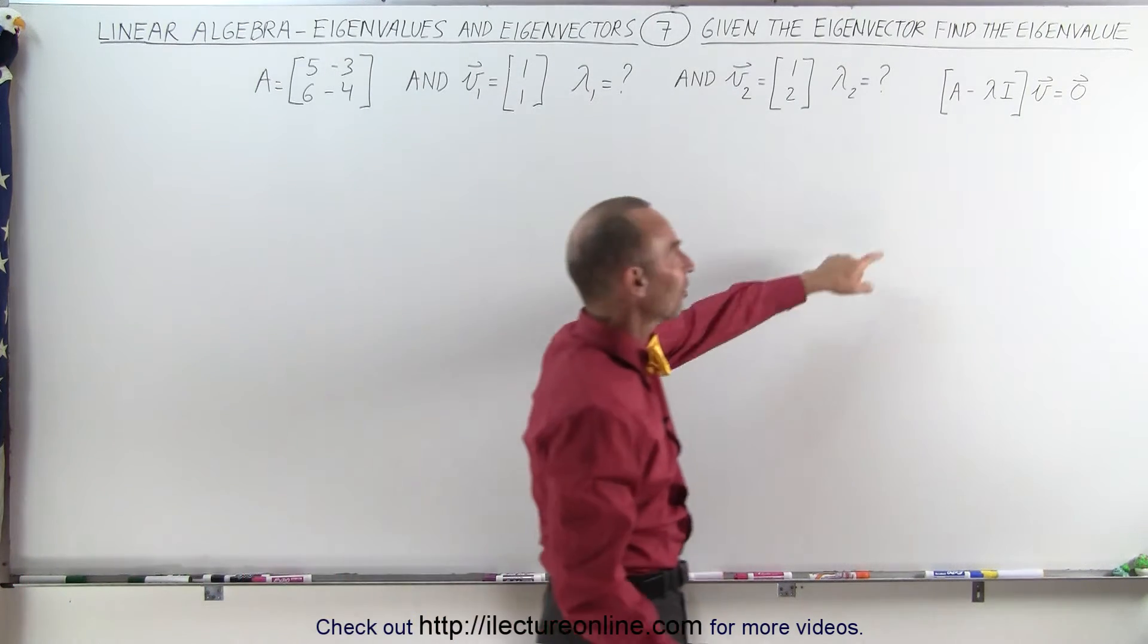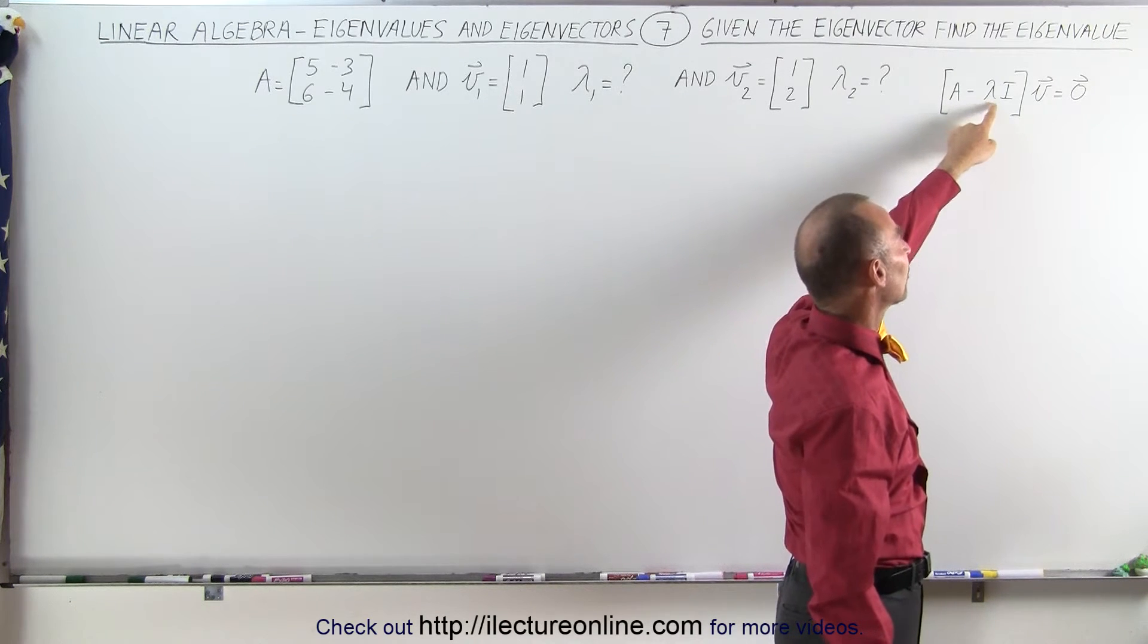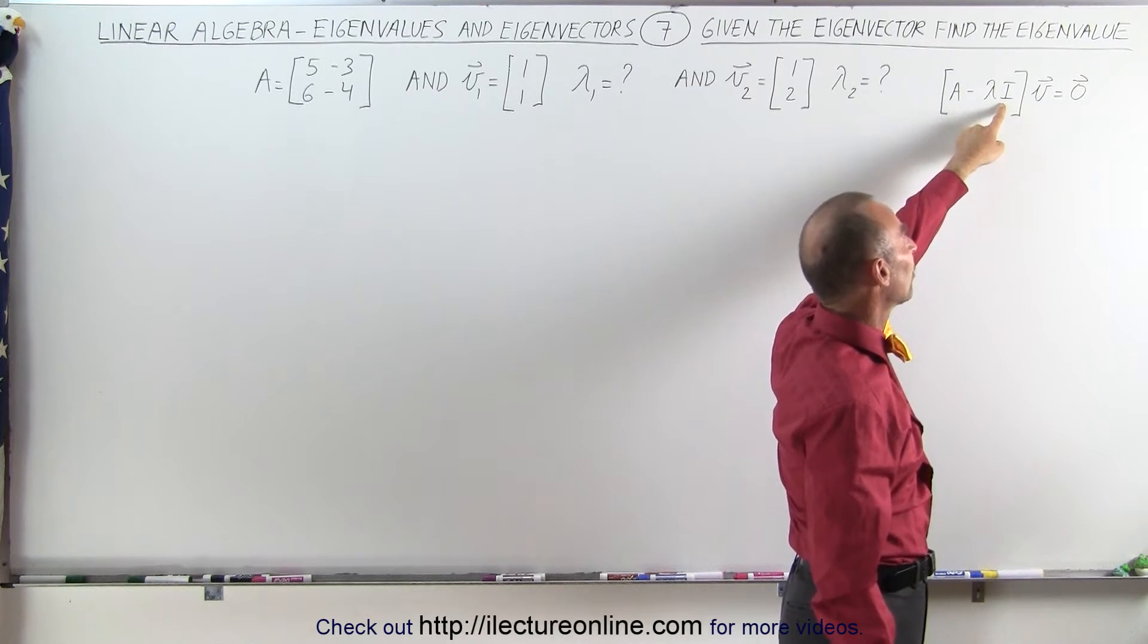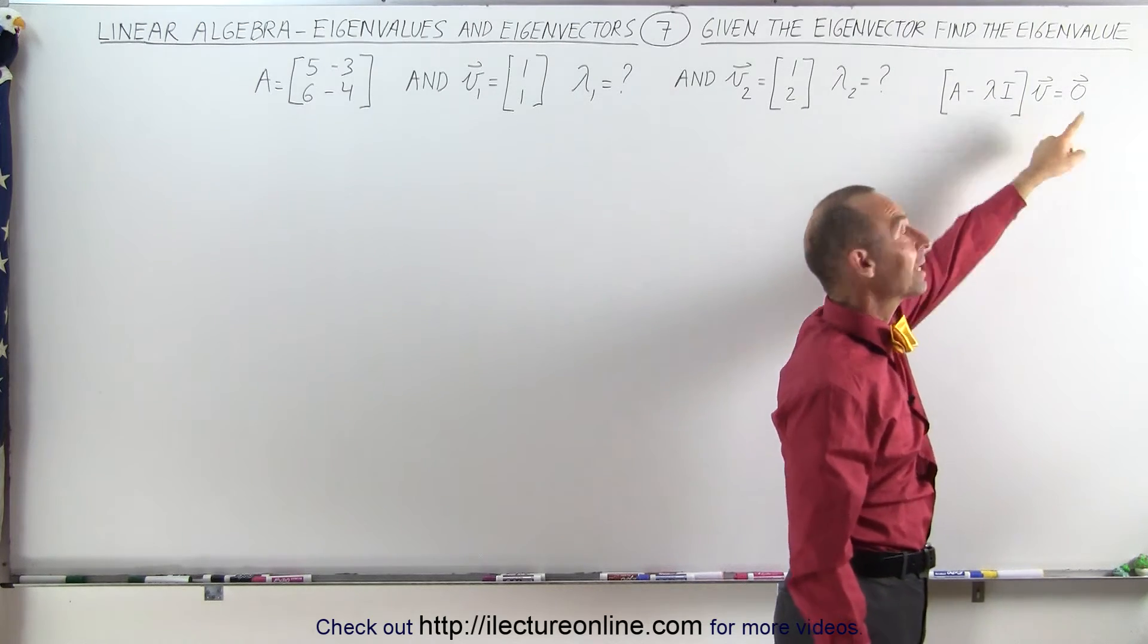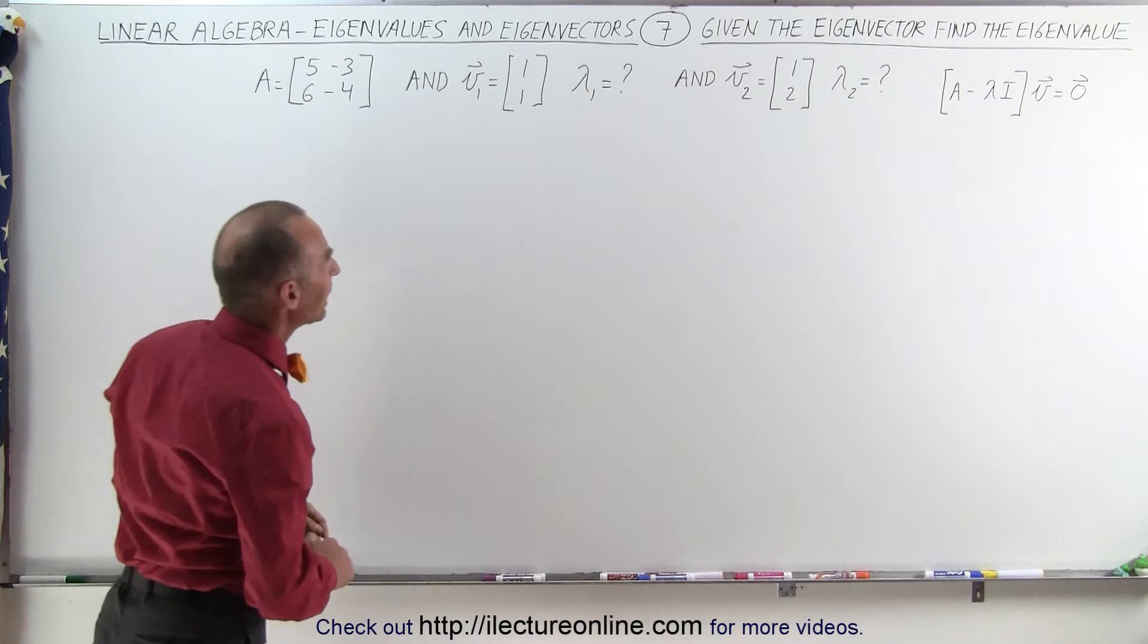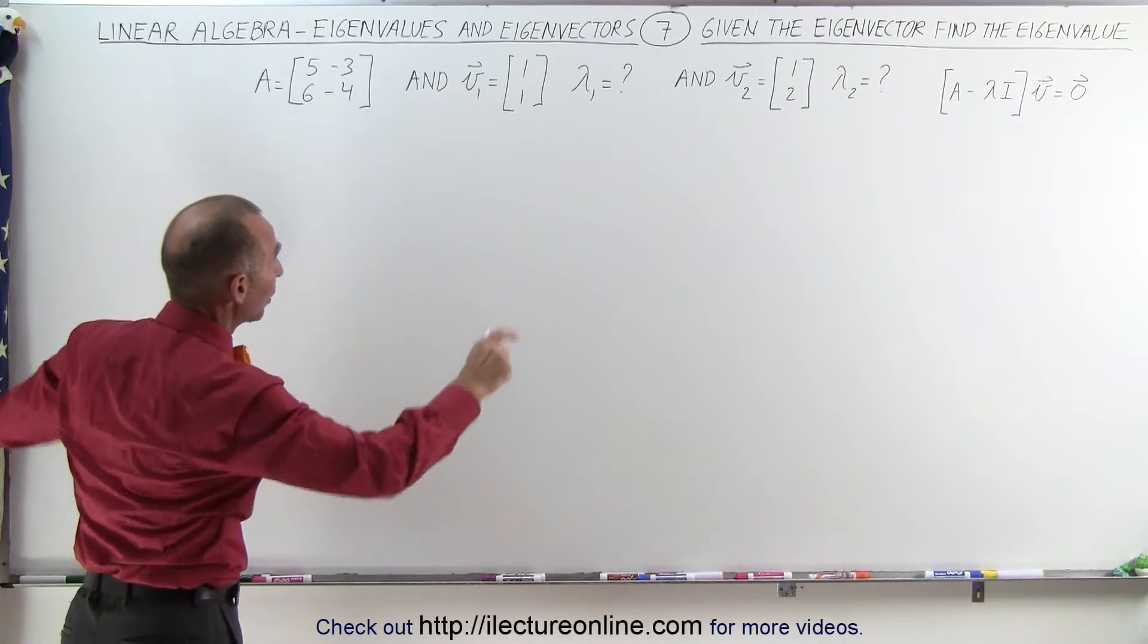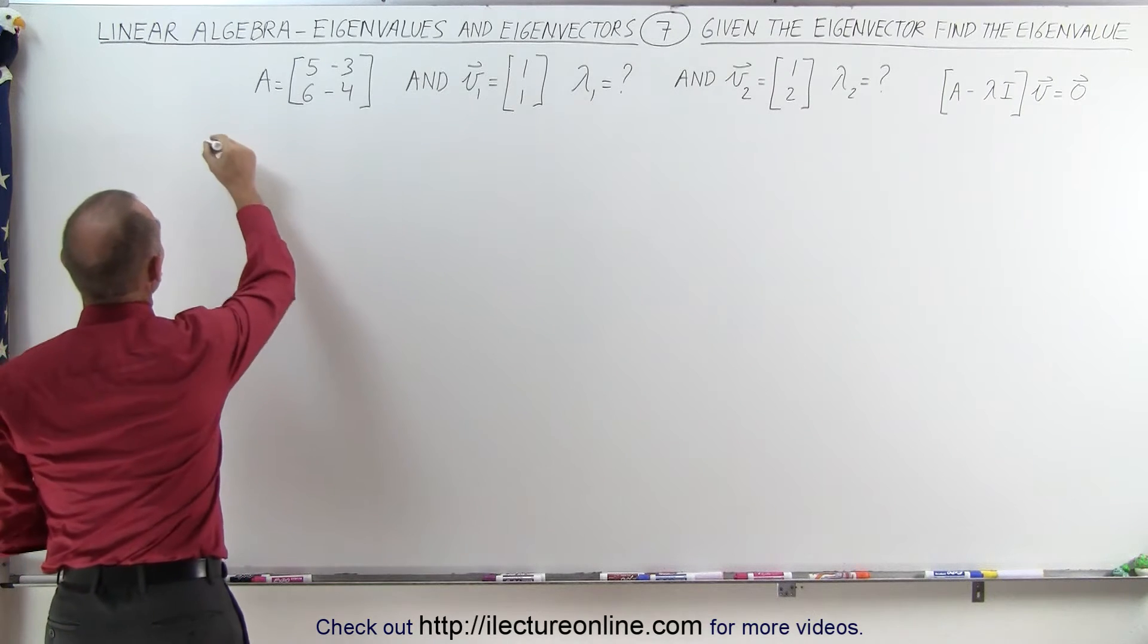Of course this equation is still valid: the matrix minus the eigenvalue multiplied times the identity matrix, when we multiply times a vector, we should get the null vector. So we're going to use that technique to solve for the eigenvalues. Since we don't know what they are, we're going to use that format.